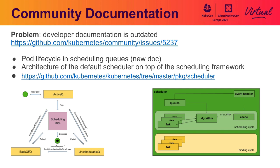There's also a new document describing the code architecture of the default scheduler and how it's built on top of the scheduling framework. In short, there are basic building blocks like the scheduling algorithm, cache, queues, and the scheduling framework. Because the scheduler allows you to configure various profiles, each profile corresponds to an instance of the scheduling framework. Once configured and assembled together, you get a functioning scheduler component.